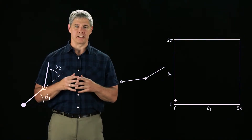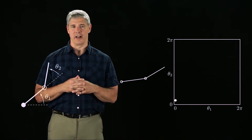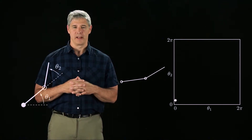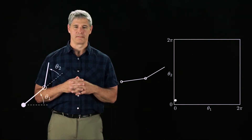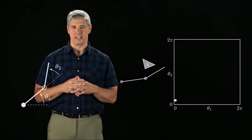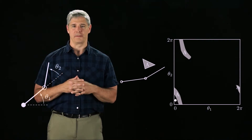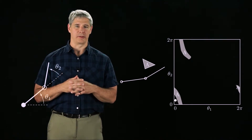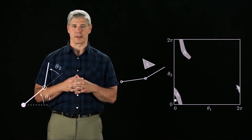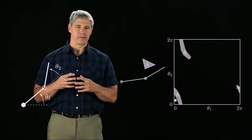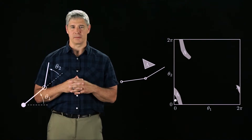We can represent the specific configuration of the robot as a point in the C-space. Here, theta 1 and theta 2 are both close to 0, so the point is in the bottom left corner of the C-space. If there is an obstacle in the environment, the obstacle can be represented in C-space by the set of robot configurations where the robot would collide with the obstacle. Even though the C-space obstacle looks like three separate regions, if we remember the topology of the C-space, we see that it is just a single connected region.